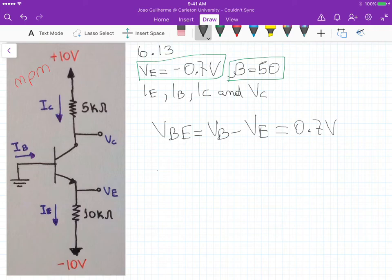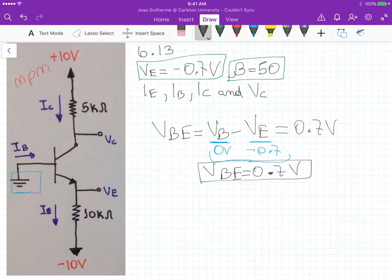And we know that if we look at the circuit here at the base, we know that exactly at the base, the potential is 0 because it's grounded. So this potential here, it's 0 volts. And this one here, VE, we know from the statement of the problem that's minus 0.7. So if we analyze this part here, we see that we have 0 minus minus 0.7, which gives us indeed 0.7, 0.7 volts.